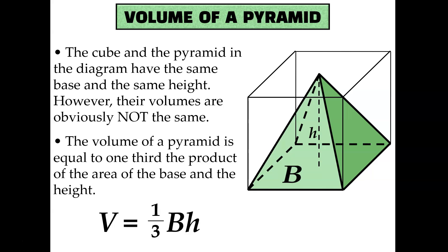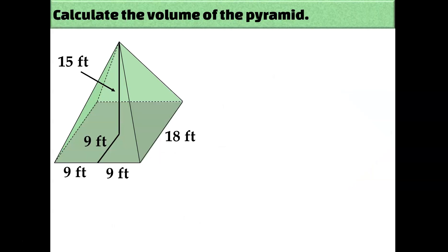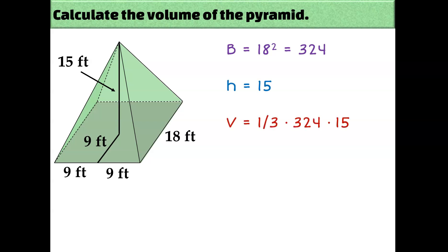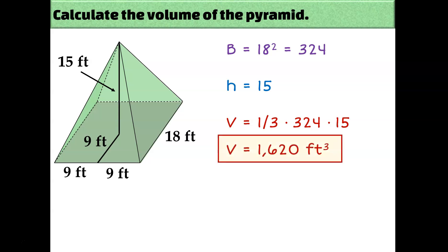Let's try an example. Here we have a square pyramid. Its base would be 18 squared — 324 square feet would be the area of its base. And the height of this pyramid is 15 feet. So to calculate the volume, it's one-third times the area of the base times the height, and I get a total volume of 1,620 cubic feet.